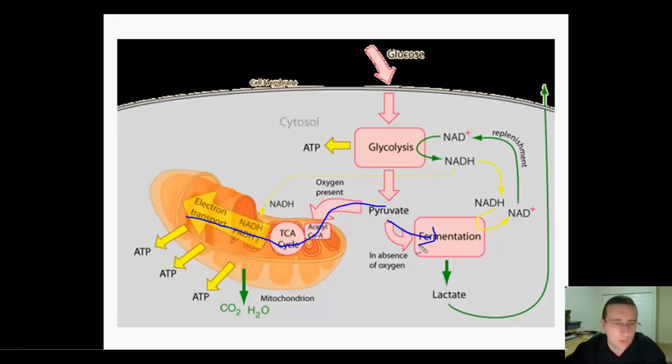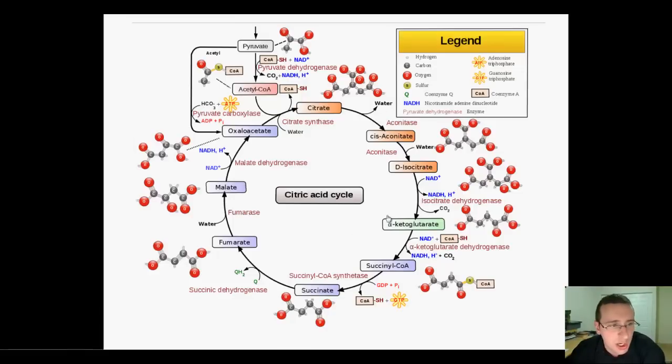One thing I forgot to mention when I did the Krebs cycle in the previous video is that when you actually do the Krebs cycle, you have to go ahead and recharge oxaloacetate, which means you're not going to completely destroy the glucose. Some of it has to be recharged so you can reconstruct the four-carbon oxaloacetate. That's part of the reason why some of the energy in glucose is not actually released.